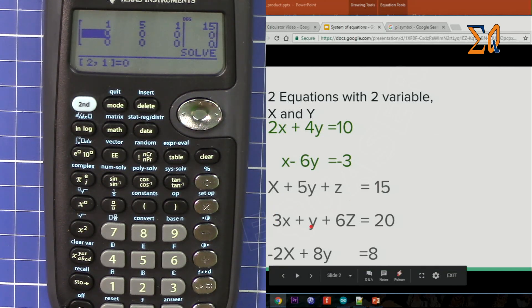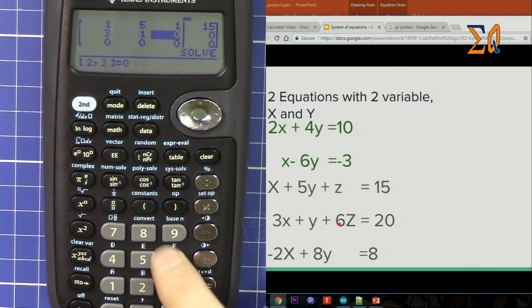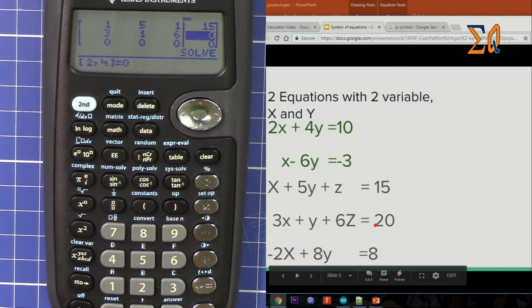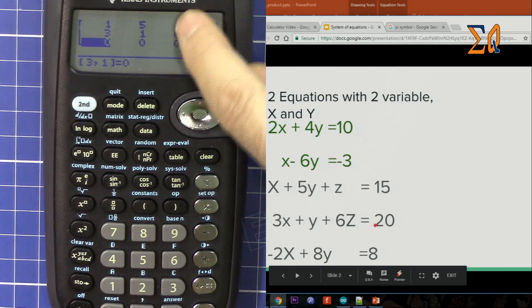Now the second one: 3, 1, 6. So 3, equal, 1, equal, 6, equal, and then 20. So this line here on the screen refers to that. This is augmented way to show it.